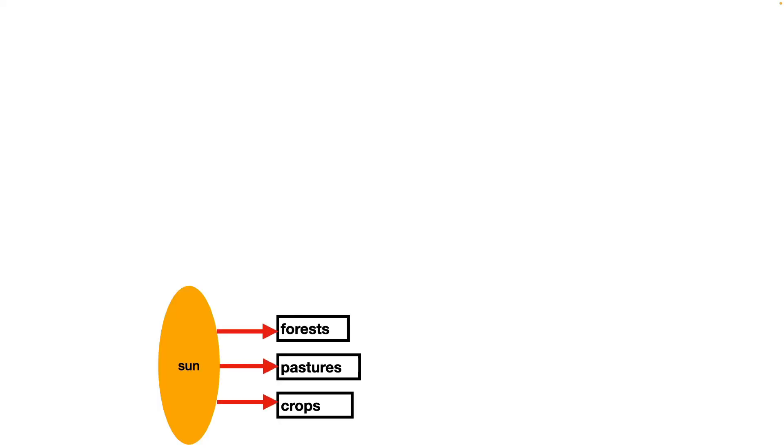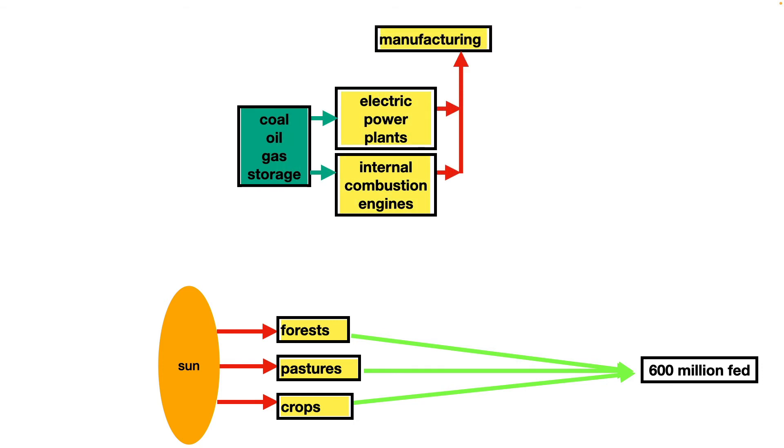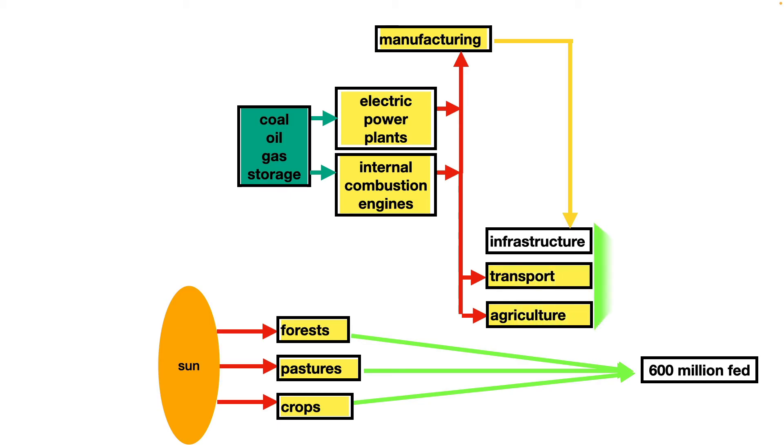These simple examples of tanks and flows making predictions without experience can be extended to infer future conditions of civilizations. For example, sunlight flowing onto all possible subsistence farming locations on Earth will feed 600 million people. Electric power plants and internal combustion engines are powered by flows of coal, oil, and gas. They produce power that flows to manufacturing. Manufacturing flows machines to farms, and the flows of power to these machines produce a flow of food to feed 8 billion people.